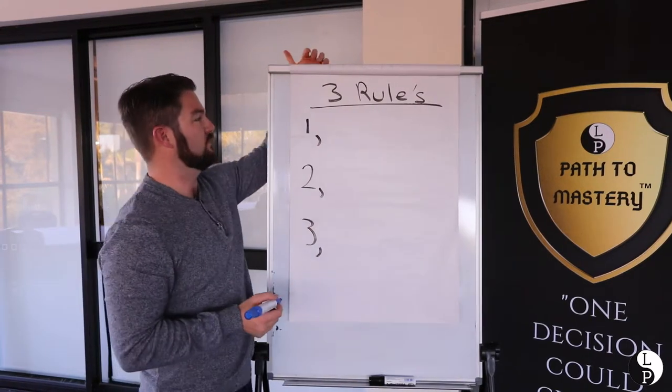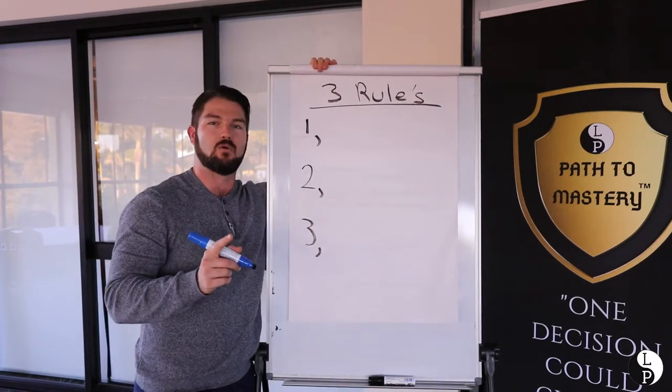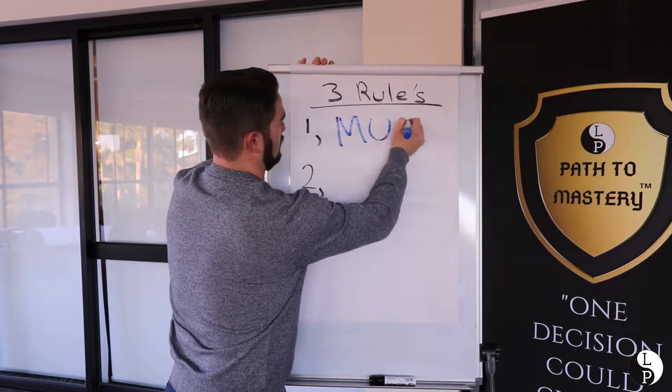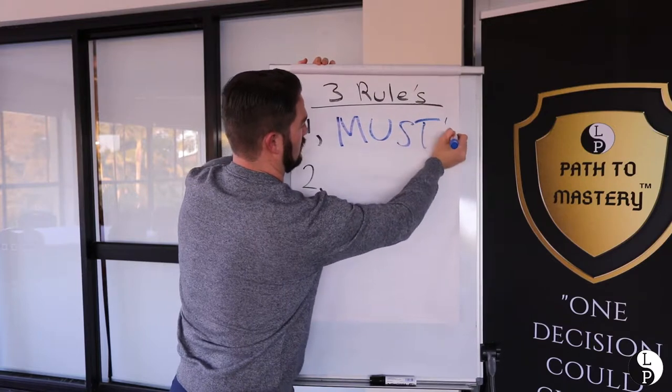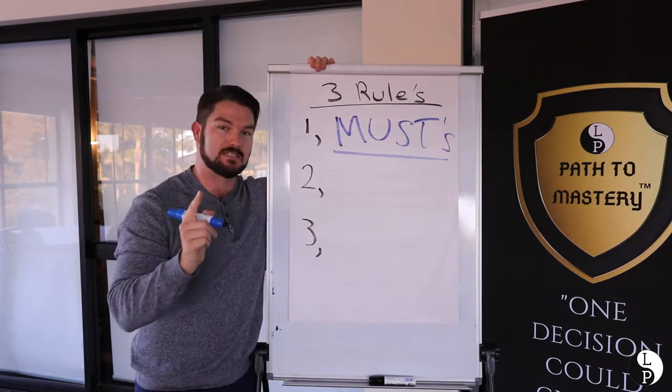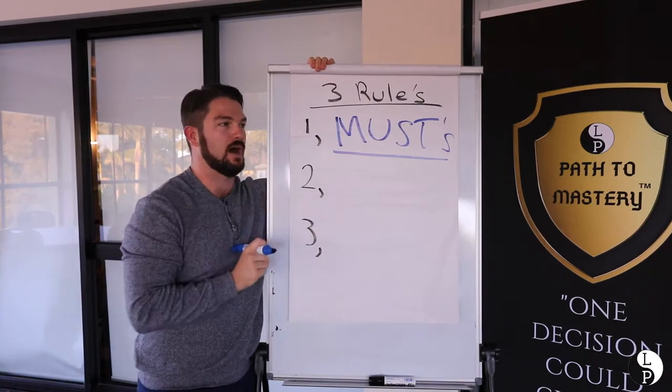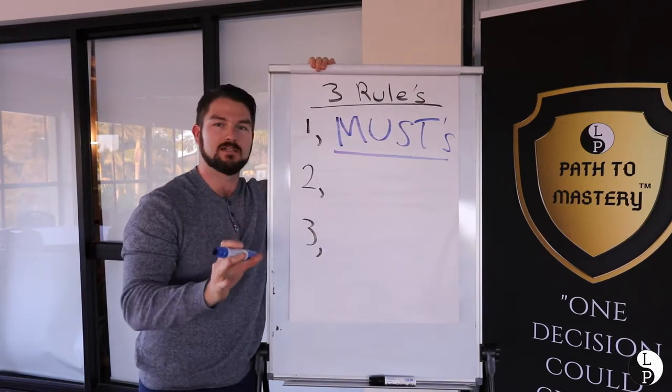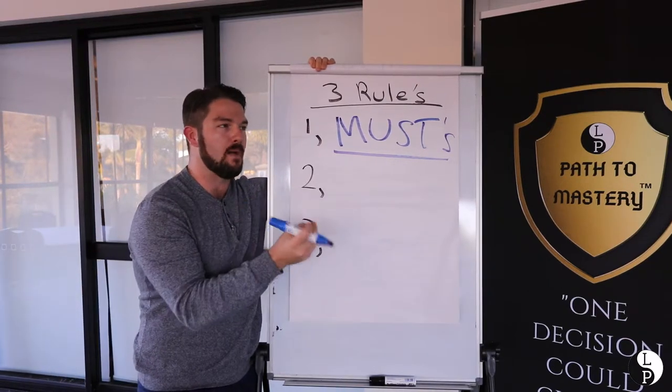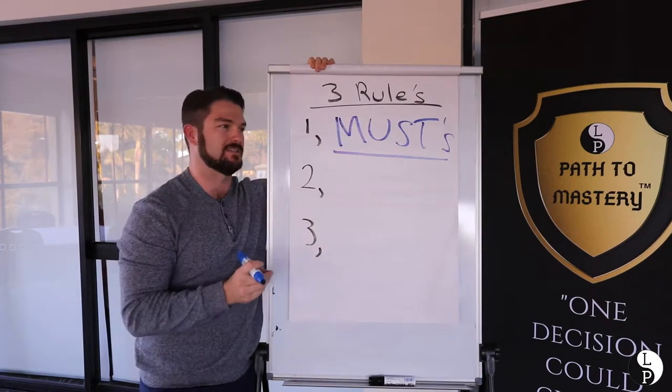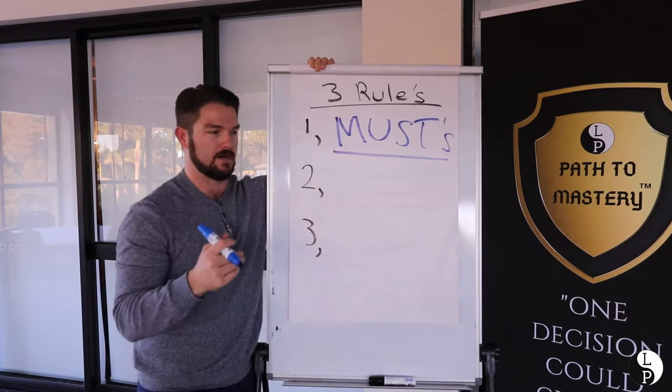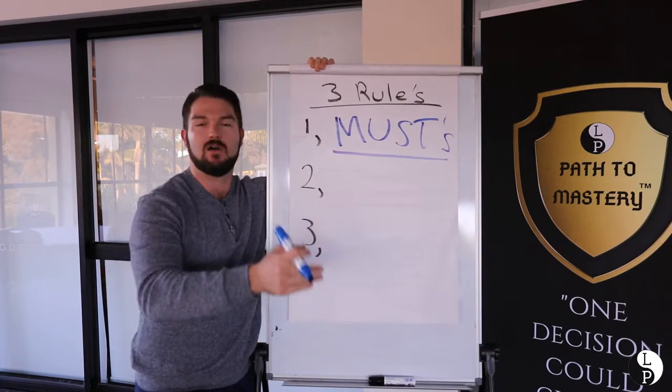So let me take you through. The very first one is, you need to find out what their musts are. Must. Within your partner, they are going to have a must list. Here's the magic words. You ask your partner, what must an amazing partner do? Just literally ask them and say, what must an amazing partner do? They might say things like loyalty, always love me, be honest, you know, be nice, whatever it might be.